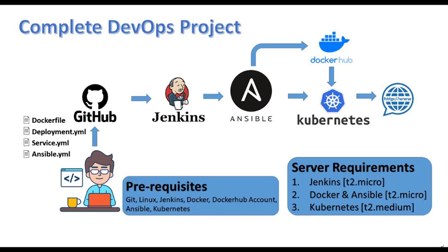For prerequisites we require Git, a Linux system, Jenkins, Docker, a Docker Hub account — so create one if you don't have it — and then Ansible and Kubernetes. I'll share information on how to install Jenkins and Ansible as well; there are very few easy steps to follow. The Ansible YAML file will deploy the pods to Kubernetes using the Kubernetes controller.